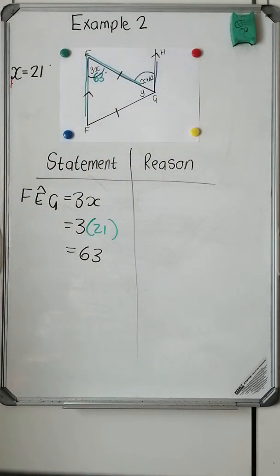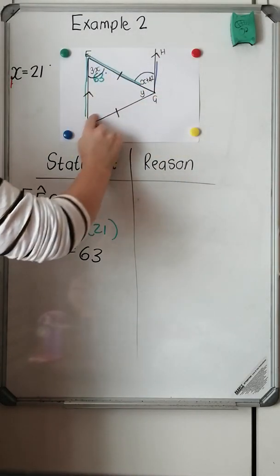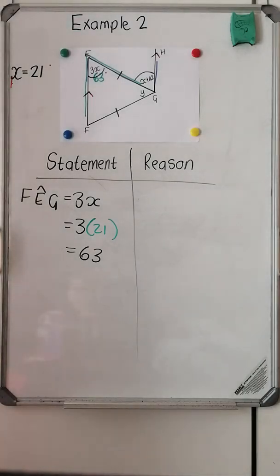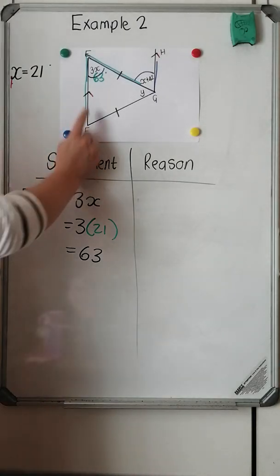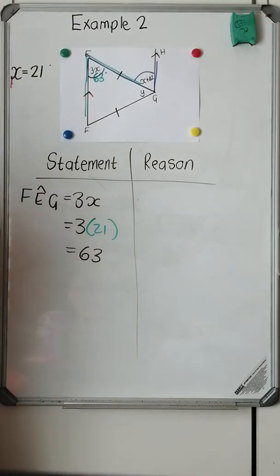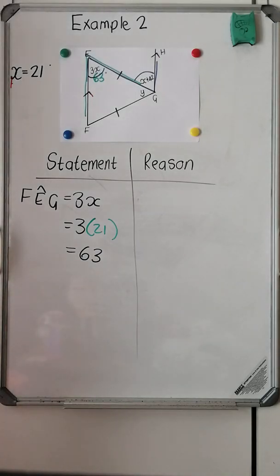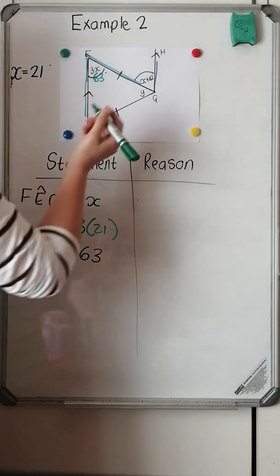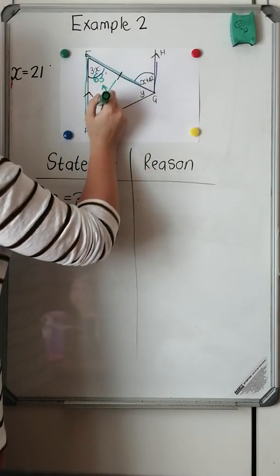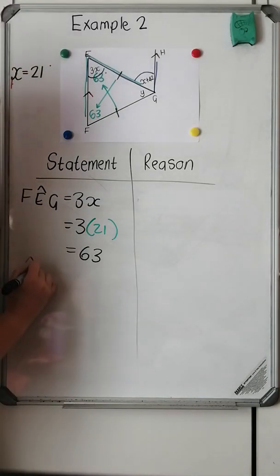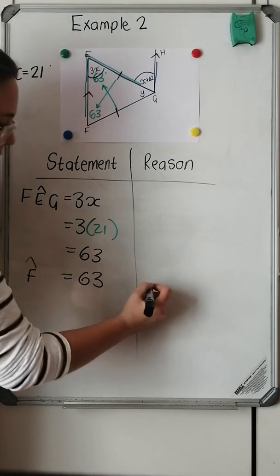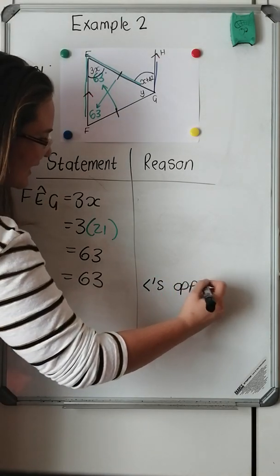I know that the interior angles of a triangle are supplementary, which means they add up to 180 degrees. I also notice triangle EFG has two equal sides marked, which tells me it is an isosceles triangle. So the angles opposite the equal sides are equal as well — that angle and that angle must be equal. So angle F must also be 63 degrees. I'll tell the marker: angle F equals 63 degrees, because of the angles that are opposite equal sides.